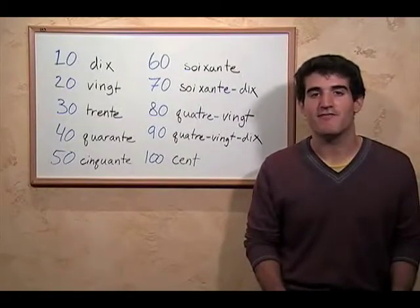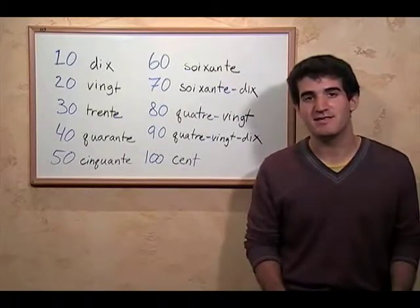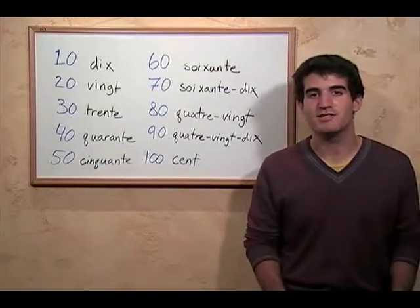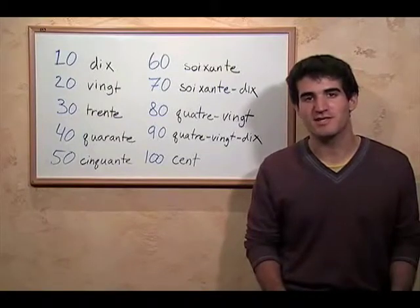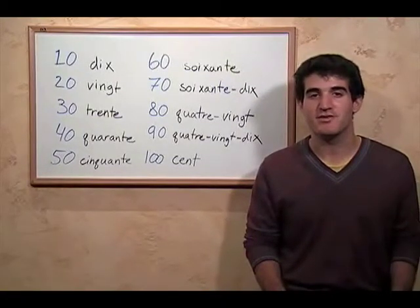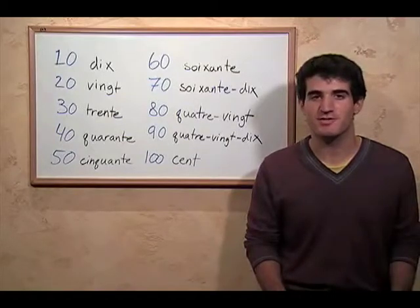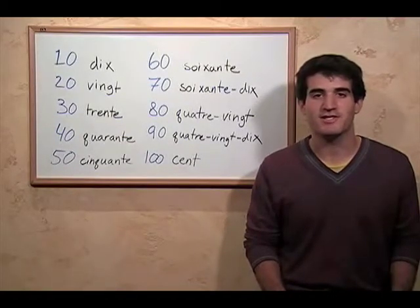And then for ninety, we say quatre-vingt-dix, which is four times twenty plus ten, which is ninety. So these three don't have their own words, they have these composed words. But they work just the same, and we get used to them.